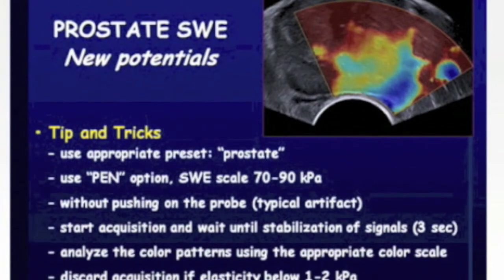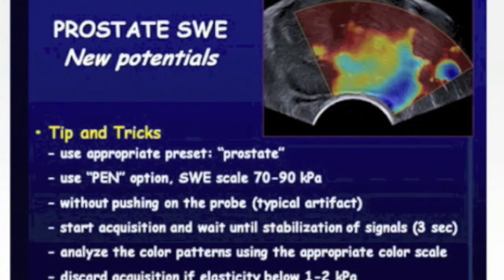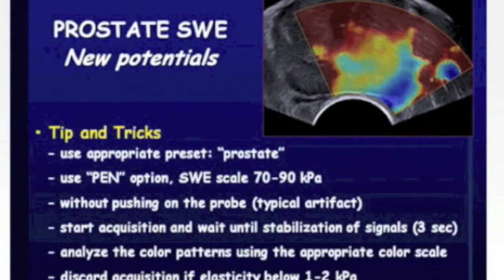As a new imaging technique, there is a lot to learn about the scanning approach. You should use a prostate preset and the penetration option. The shear wave scale should be adapted to the organ and situation — we maintain the maximum shear wave elastography value between 70 and 90 kilopascals. The critical point is not to push on the prostate with the transrectal transducer, because as you can see in this loop, when pressure is applied, the entire prostate becomes extremely stiff and red — red indicating stiff areas. Then we start the acquisition, wait to stabilize, and analyze the color pattern using the appropriate scale.